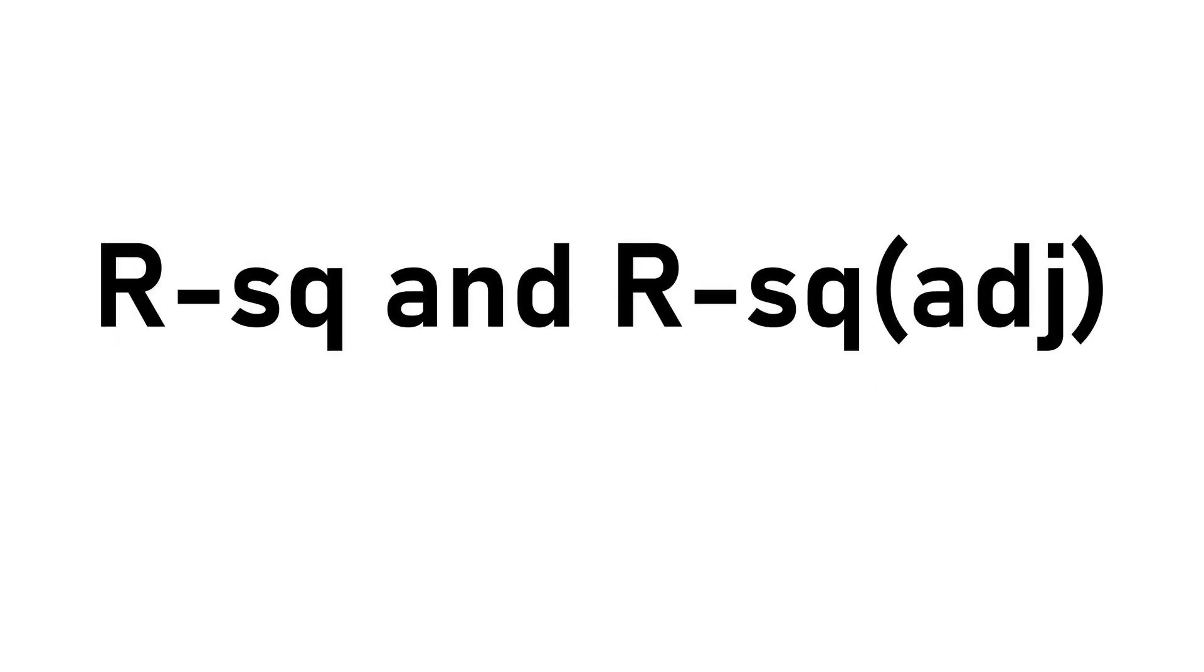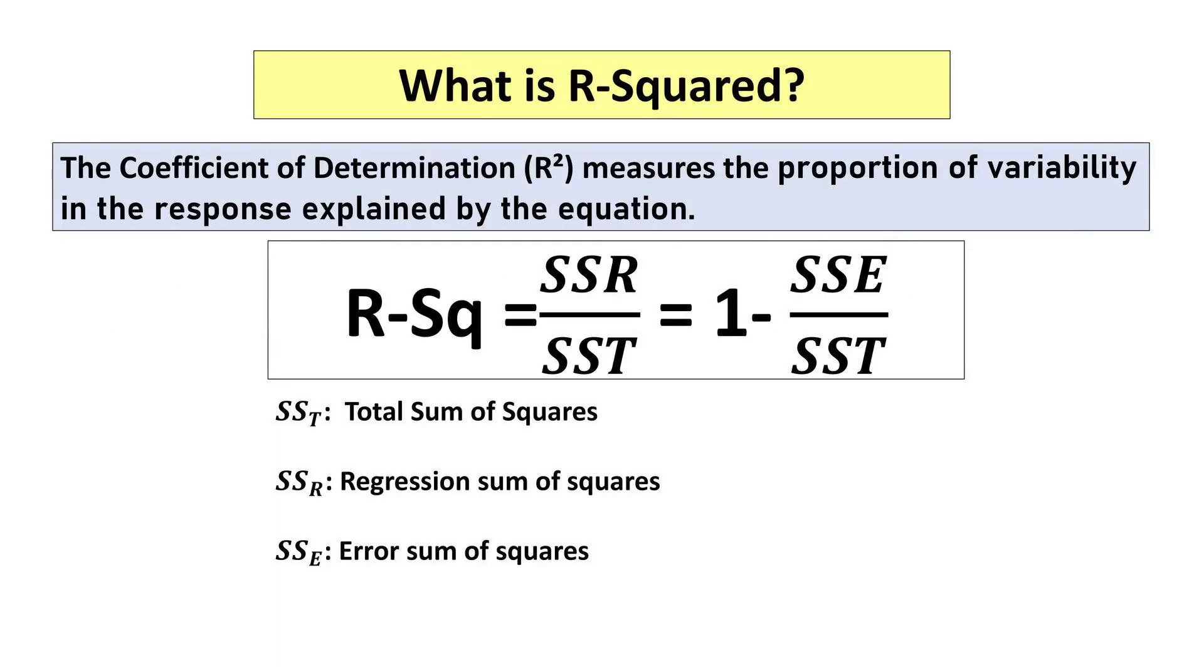R-squared and adjusted R-squared are statistical measures that provide insight into the goodness of fit of the regression model. R-squared, also known as the coefficient of determination, quantifies the proportion of variability in the response variable explained by the model.